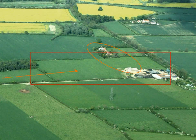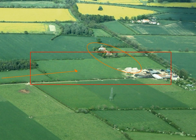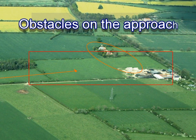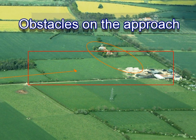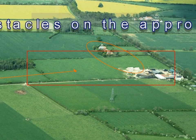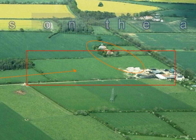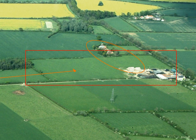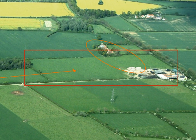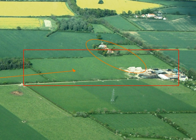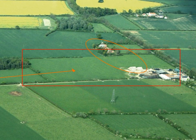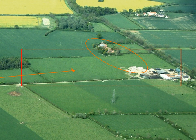An additional consideration as far as size is concerned is that of obstacles on the approach. Approaching over a low fence or hedge, for instance, is not a problem, but replace that low boundary with a line of trees and it effectively reduces the available size of the field. In this field, for example, our field is effectively longer if we make an approach from left to right across the low fence than it would be if we approached over the trees.